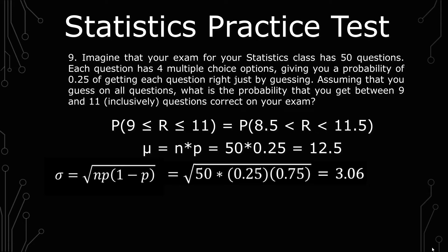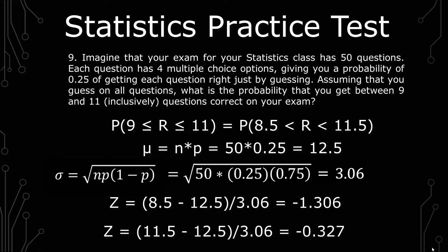Now we do two different z-score calculations. The first one is 8.5 minus 12.5 over 3.06, which gives you negative 1.306. The next is 11.5 minus 12.5 over 3.06 to give you negative 0.327.